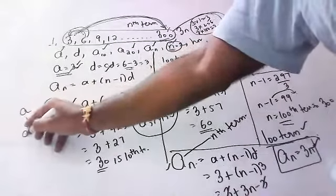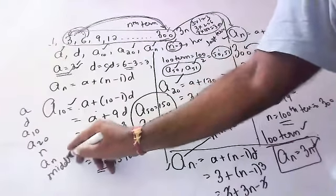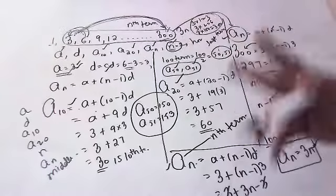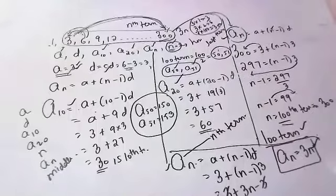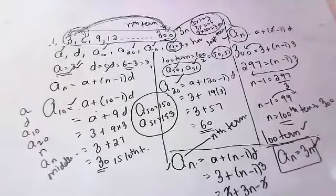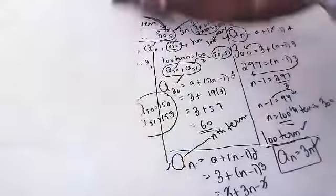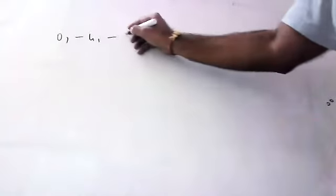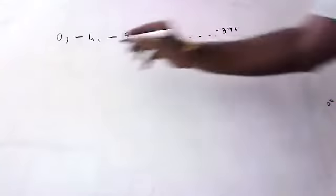So for all the sums you have to find: a, common difference, a10, a20, n, the nth term, and the middle term. If you get an even number of terms there are two middle terms; if odd, only one middle term. Let me show one more sum for your understanding. The sequence is: 0, −4, −8, ..., up to −396.